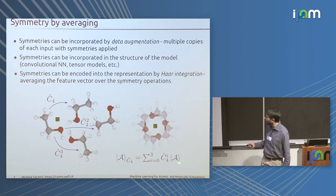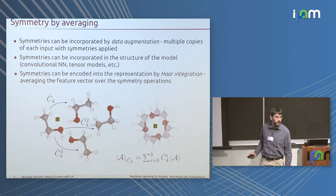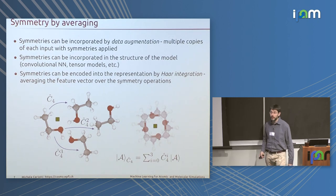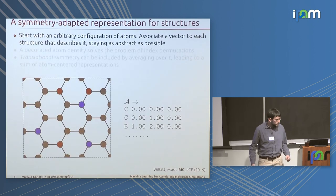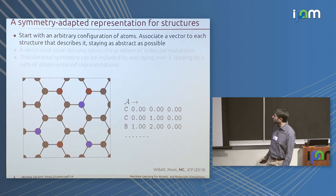I represent my molecule as the average of a starting vector multiplied by the application of the operations of the group. So how does this work in practice when you want to incorporate translations, rotations, and permutations?